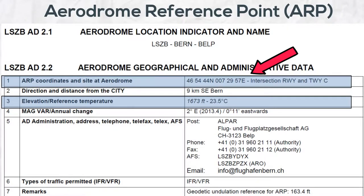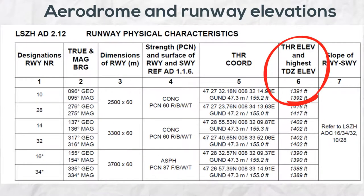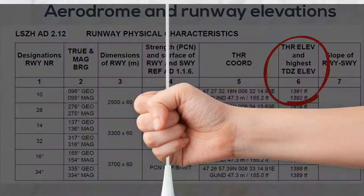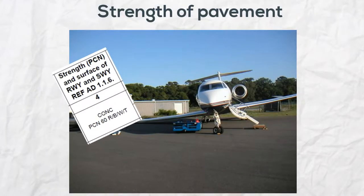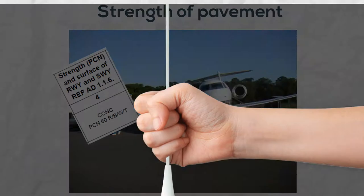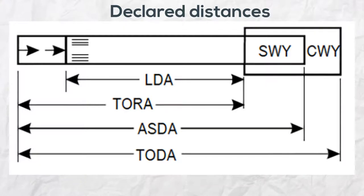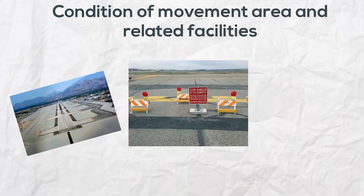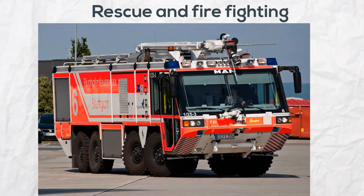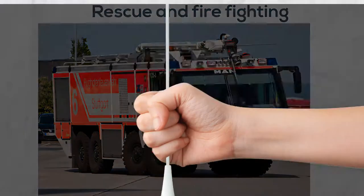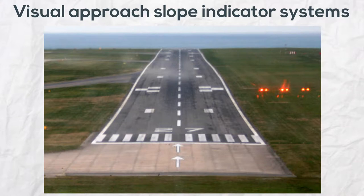The aerodrome reference point, aerodrome and runway elevations, the aerodrome reference temperature, the dimensions of an aerodrome and related information, strength of pavement, the preflight altimeter check locations, declared distances, condition of the movement area and related facilities, a plan for the removal of disabled aircraft, rescue and firefighting services, and the visual approach slope indicator systems.